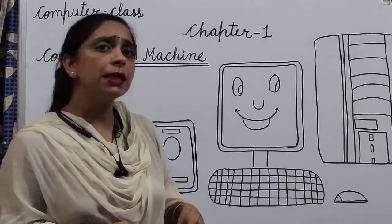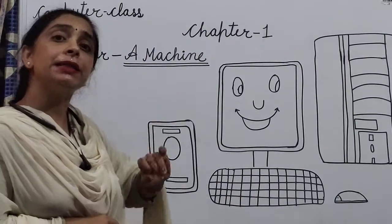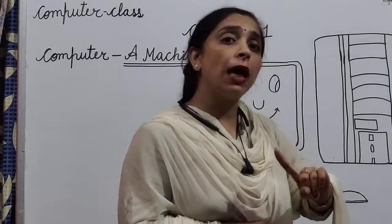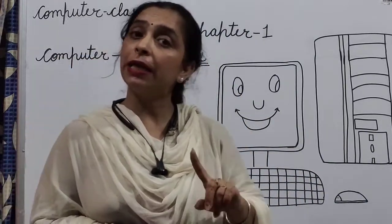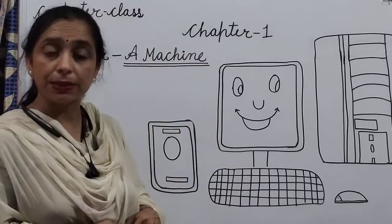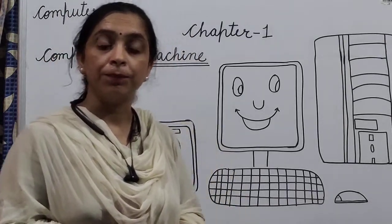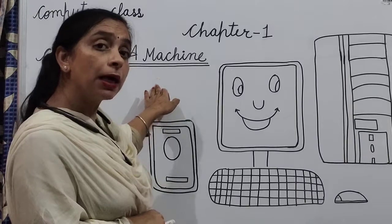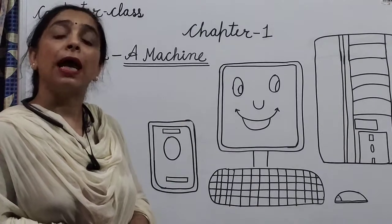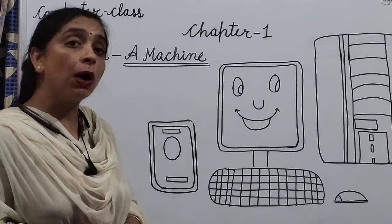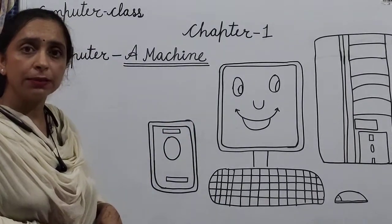Do you know what is a computer? A computer can do many tasks at the same time without making mistakes. It means it never makes mistakes. Computer means it is a device that runs on electricity and can do many tasks at the same time without making mistakes. Got it? Very good.